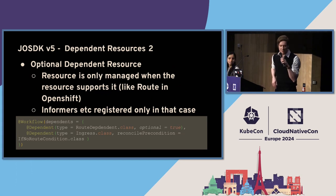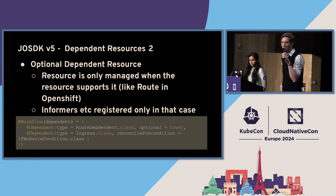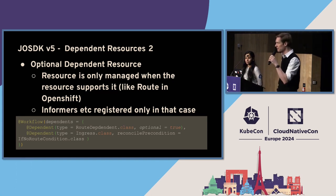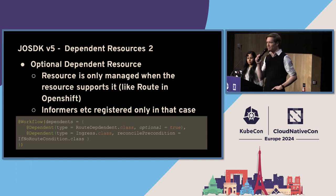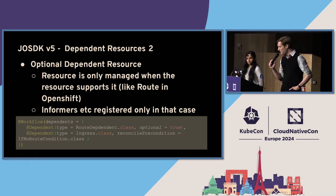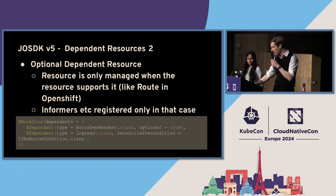They added support for optional dependent resources. Say my operator depends on some other CRD type or operator that may or may not exist on the system — their example use case is routes, which is specific to OpenShift. I can declare that when you create an instance of my CR, go make a route happen if and only if routes exist. This eases dependency issues — if I create a route when routes exist, otherwise I just make some ingress stuff.